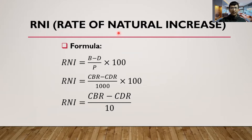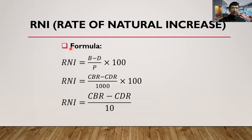First, we will talk about Rate of Natural Increase. Focus on the phrase 'natural increase.' There are three determinants of population change: birth, death, and migration. Among these, birth and death are natural determinants of population change, while migration is the artificial one. Natural increase refers to the increase determined by birth and death — if there is more birth and less death, there will be an increase in population.